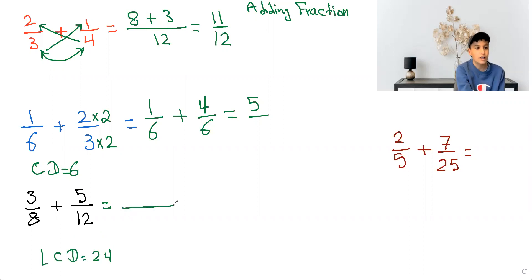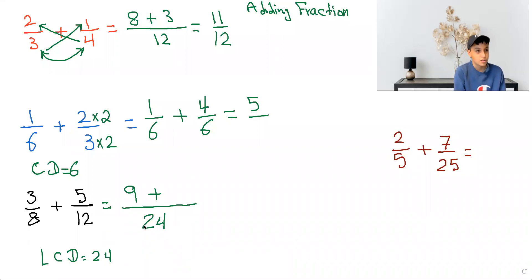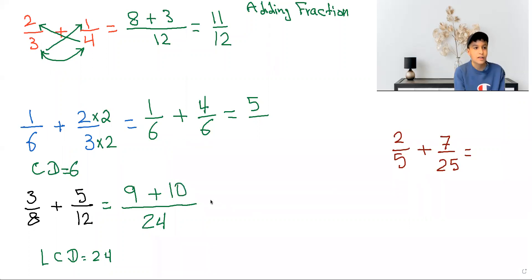Now we write a long line, and then you put 24 underneath. So now you do 24 divided by 8, which will equal 3. And then you do 3 times 3, which will give you 9, and then you put a plus sign next to the 9. And then we do the same thing to the other fraction. So 24 divided by 12 will equal 2, and then we do 2 times 5, which will give you 10. And then you add the 9 and the 10, which will give you 19, and then you keep the bottom the same, which will be 24.